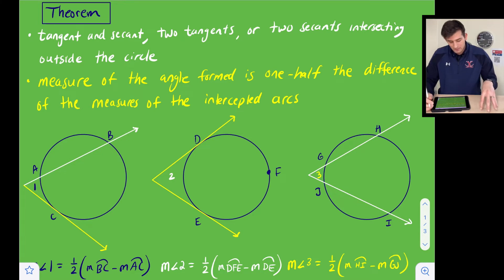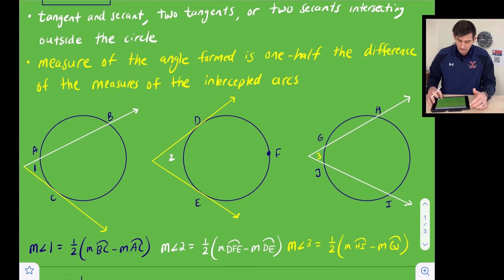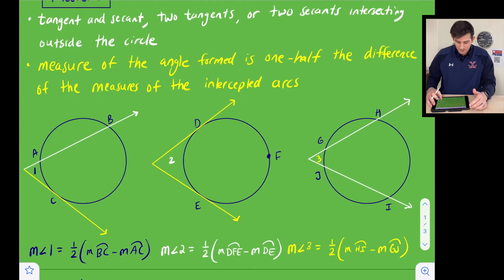When this happens, the measure of the angle that's formed, so like in our diagrams here, this would be angle one, angle two, and angle three. That's what we're talking about by the measure of the angle formed. It is one half the difference of the measures of the intercepted arcs. So let's take a look at these three diagrams that we have, because these are the three scenarios or the three cases that we could see.